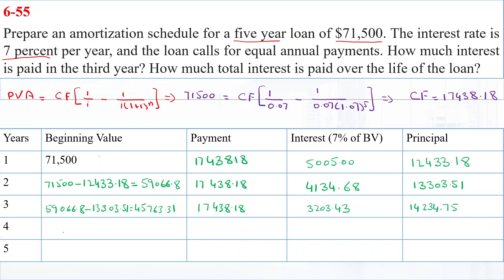In Year 4, the beginning value is $31,528.55. The payment is $17,438.18. The interest is $2,207, and the principal payment is $15,231.19.